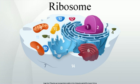The ribosome is a large and complex molecular machine, found within all living cells, that serves as the primary site of biological protein synthesis. Ribosomes link amino acids together in the order specified by messenger RNA molecules. Ribosomes consist of two major components: the small ribosomal subunit which reads the RNA, and the large subunit which joins amino acids to form a polypeptide chain.